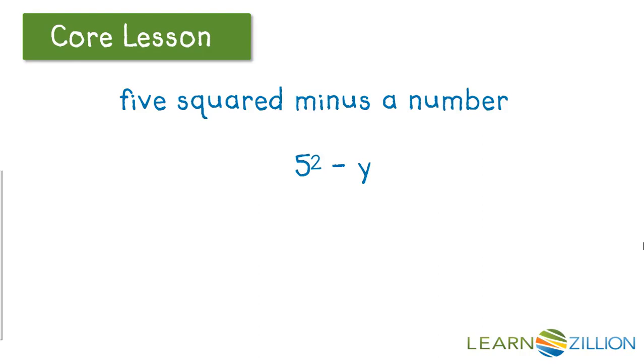And to substitute a number for a variable, I use the variable y. So, 5 squared minus a number is the same as 5 to the second power minus y. y is the variable.